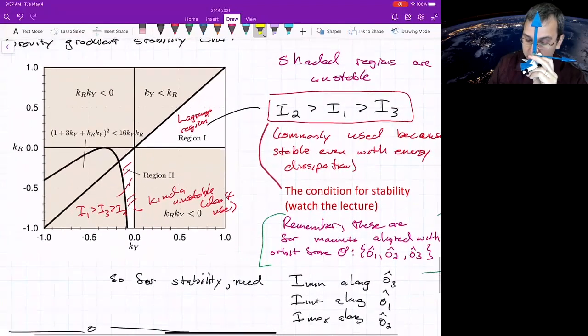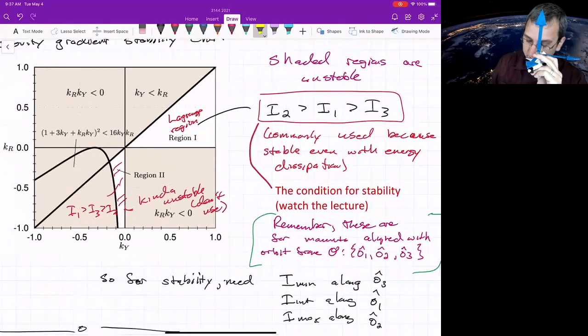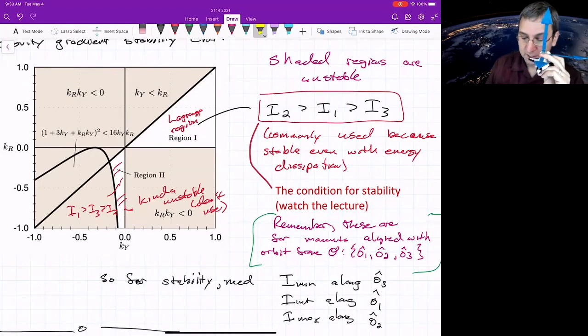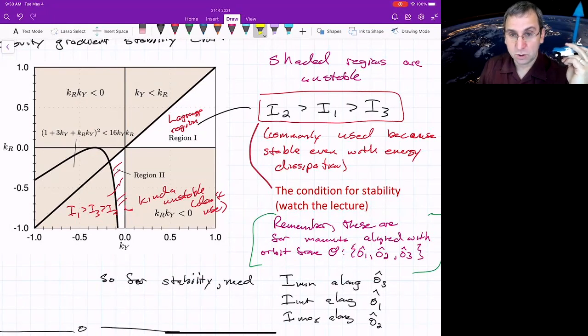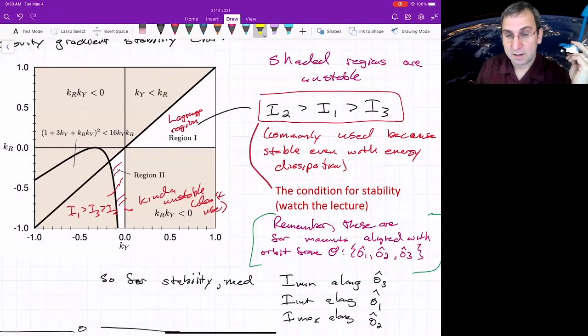This is the criterion for stability. And these are for moments that are aligned with the orbit frame. So this means that the largest moment of inertia is aligned with O2. The intermediate is aligned with O1. And the minimum is aligned with O3.